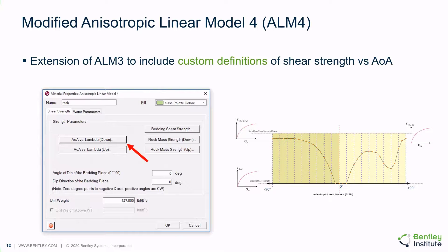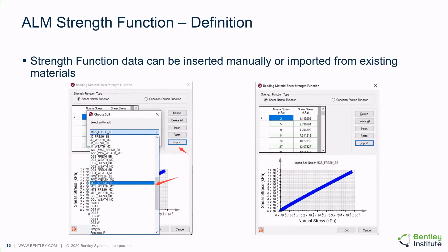ALM4 further extends ALM3 on the relationship between the angle of anisotropy and shear strength, now allowing custom definitions of that relationship. The curve is entered as a series of points and the software performs linear interpolation between the points; therefore, ALM4 is the most general method and allows definition of shear strength at any angle. ALM4 could also be utilized to model any of the other ALM1 to ALM3 methods. It is also possible to insert ALM shear strength functions manually or import parameters from existing materials — useful because points from the Hoek-Brown or Barton-Bandis models can be exported and implemented in the context of ALM1 to ALM4.